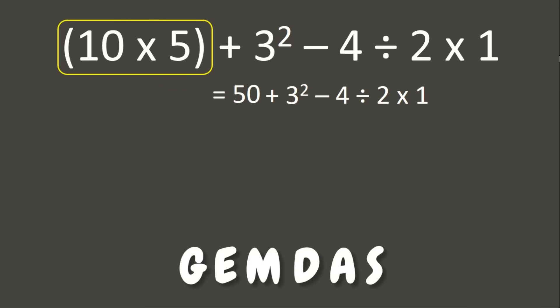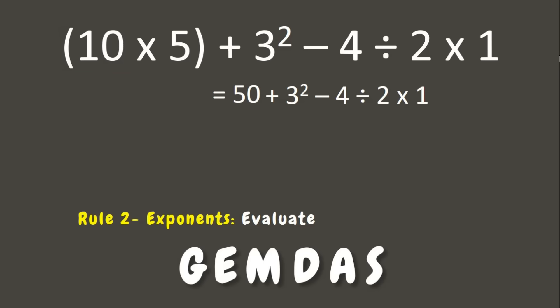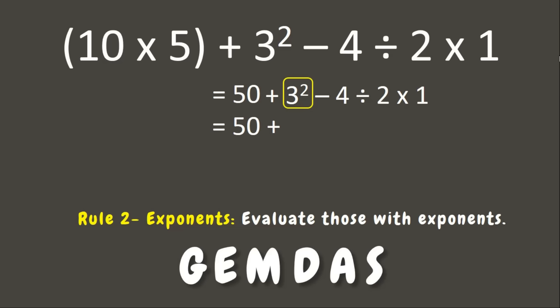The next rule is the Exponent. We need to evaluate those numbers with exponents. Here we have 3 to the second power, or 3 squared. Let us evaluate: 3 squared is 3 times 3, which is 9. Now let us copy the remaining expressions.